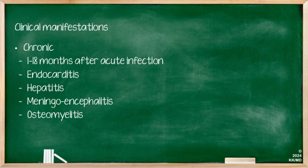The chronic infection occurs 1 to 18 months after acute infection and comprises manifestations such as endocarditis, hepatitis, meningoencephalitis and osteomyelitis.